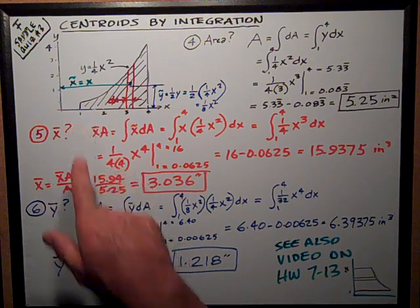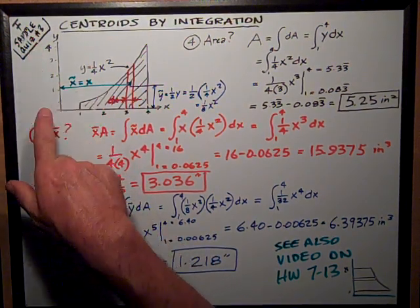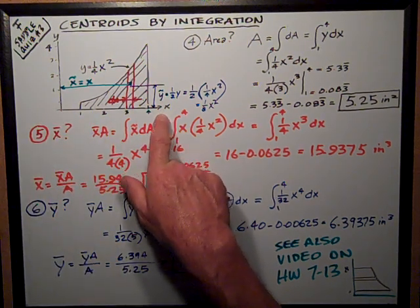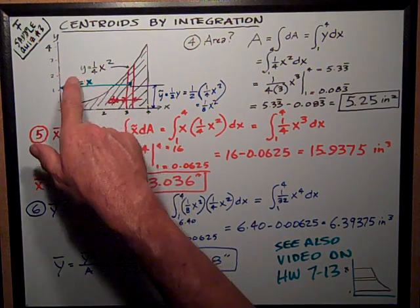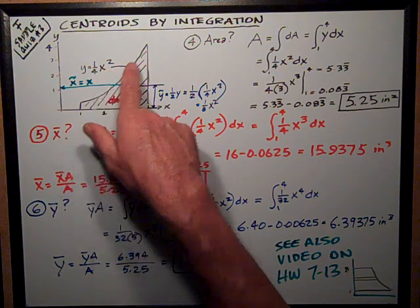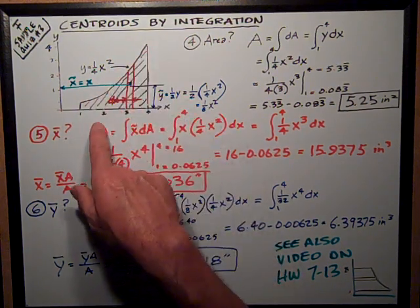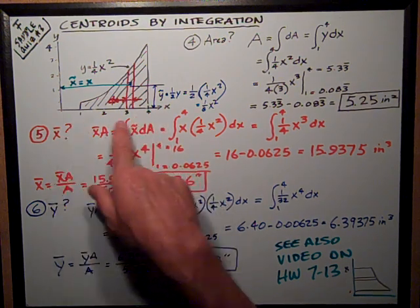First, talking about the problem setup, we have a curve with y-axis in the vertical, x to the horizontal, and the curve is defined by the formula y equals one-fourth x squared. That describes that curve right there.